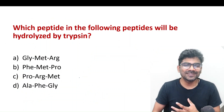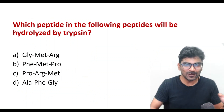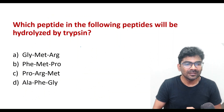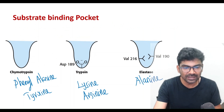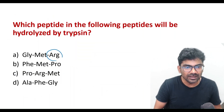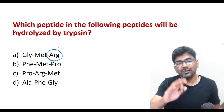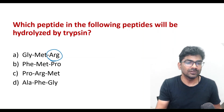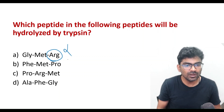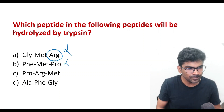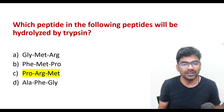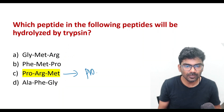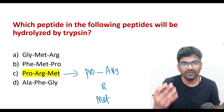Now you will be able to answer these questions very easily. Try to answer which one will be hydrolyzed by trypsin. Trypsin will act on lysine and arginine. See, there is arginine here, but trypsin will act after arginine — so not this one. There is no arginine or lysine in another option, so no. The answer is here — this will cleave into proline-arginine and methionine, and that will be the product.